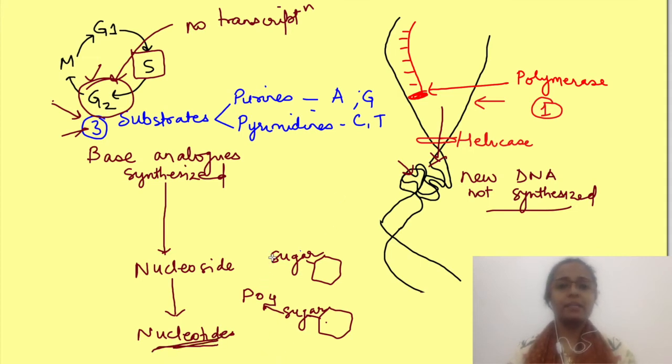So the anticancer class of drugs which act on this phase either interfere with the synthesis of purines and pyrimidines or their incorporation into DNA, or maybe by both these mechanisms. These are known as antimetabolites.